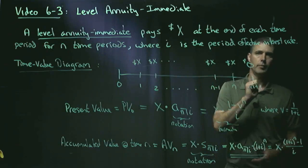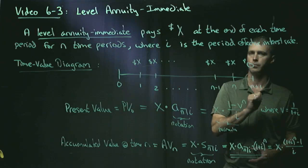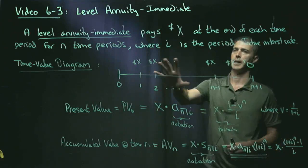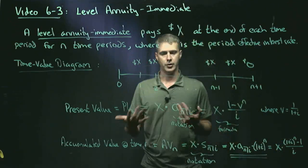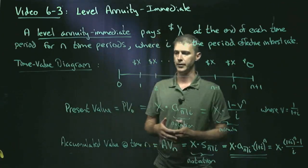One period later, no money. The annuity is over. So there's the time value diagram. And generally, we want to be able to calculate the present value. Once you have the present value, you can get anything else, as I'll demonstrate.